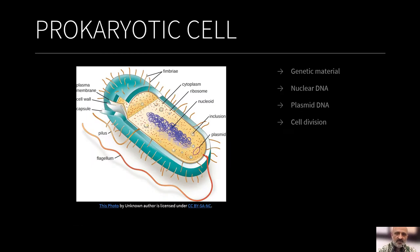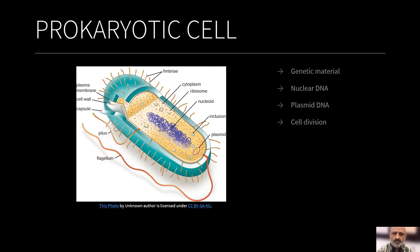Now let's look at the prokaryotic cell. I would not like to call it simple because the simplicity is underscored by the level of processes which are taking place in the cell. Now we look at the various kinds of cells within the context of the prokaryotic and eukaryotic cells with regard to the nuclear organization, as well as the structural and functional elements within the cell.